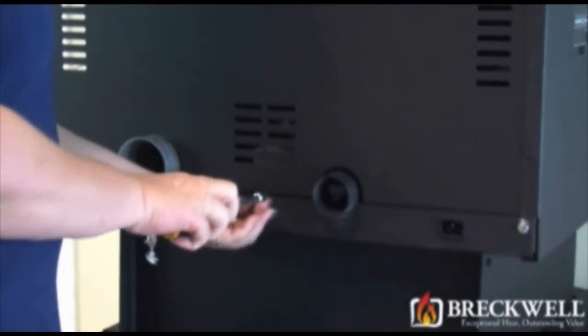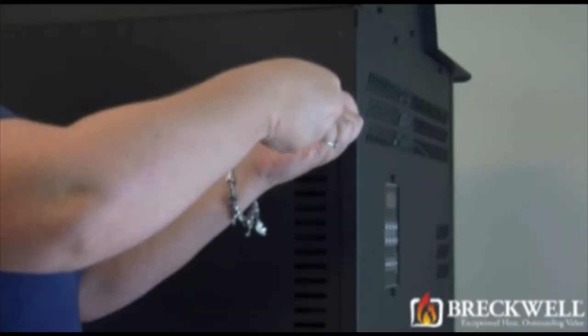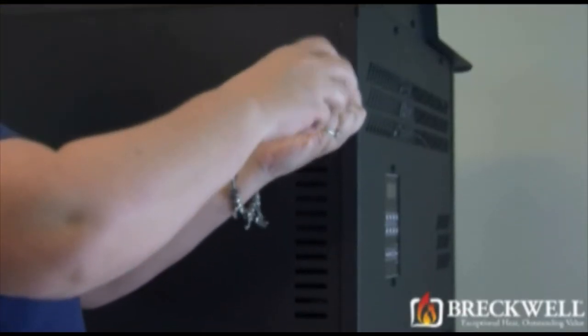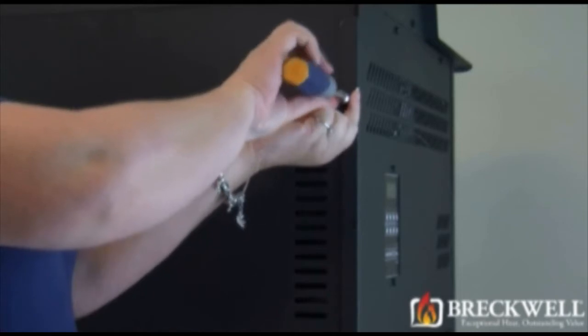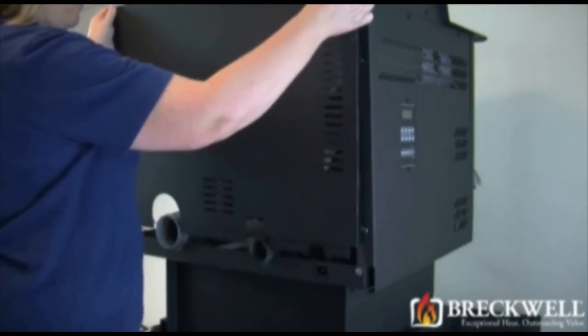We will also need to remove the rear panel of the stove for our repair. To remove the rear panel, remove the single screw at the bottom and the two screws on the right hand side. Pull the side panel away from it and then lift this rear panel up, out and away from our stove.